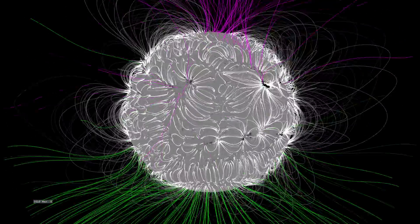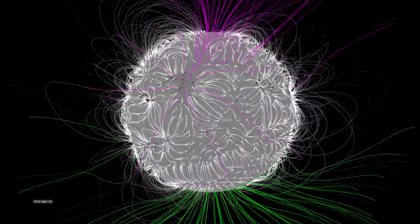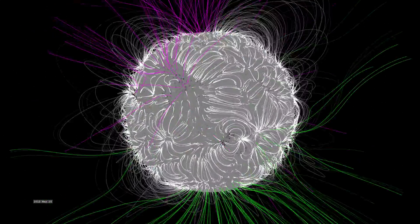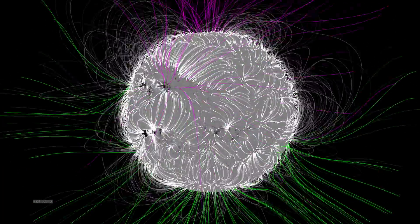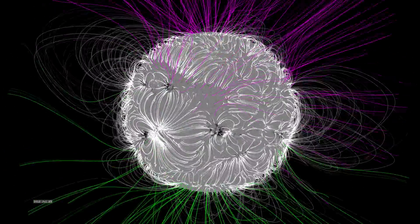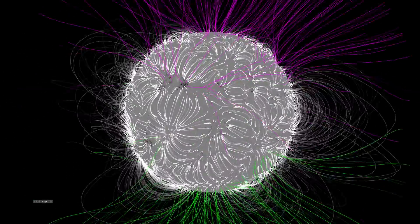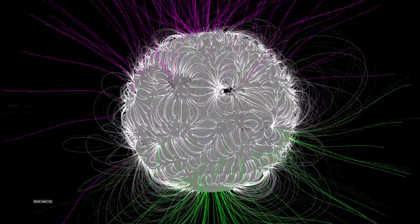Other field lines emerge from the surface and head off into space. We call these field lines open and color them green if they emerge from a positive magnetic field region, or violet if they emerge from a negative field region. These open field lines often correspond to regions called coronal holes, which provide a fast track for charged particles to leave the Sun and become part of the solar wind.